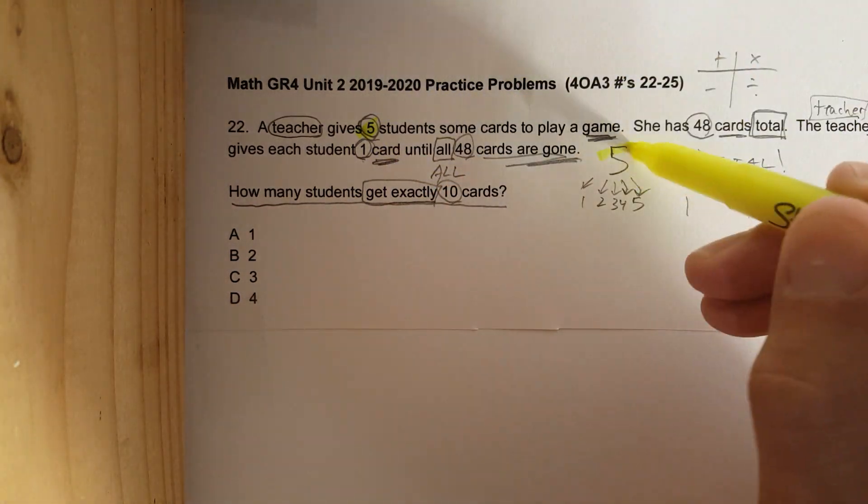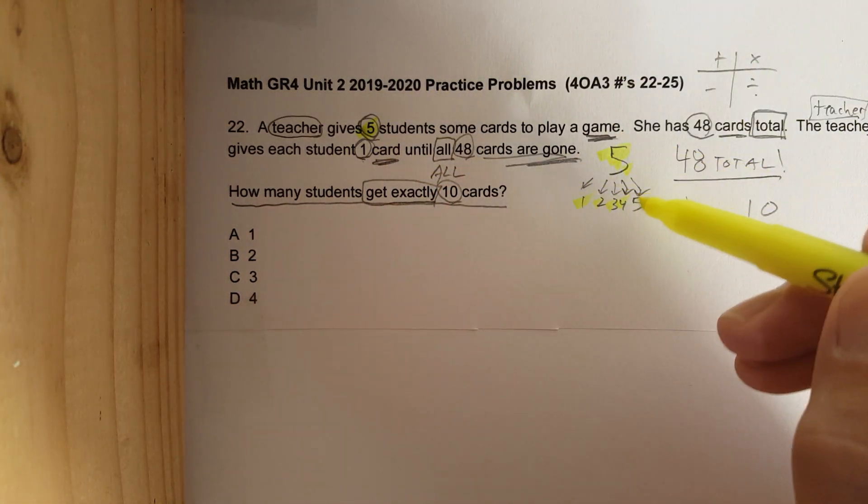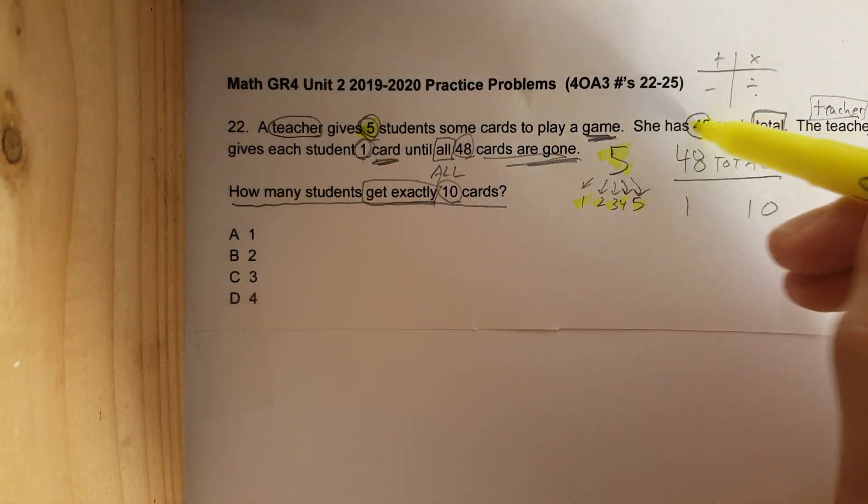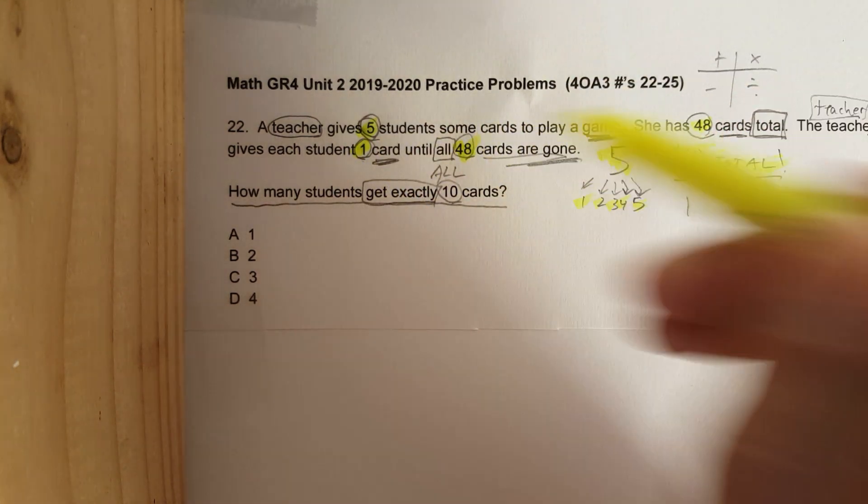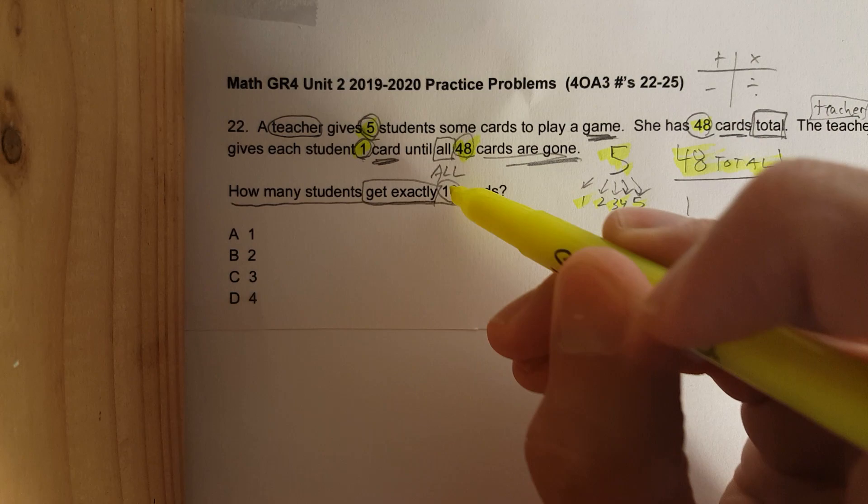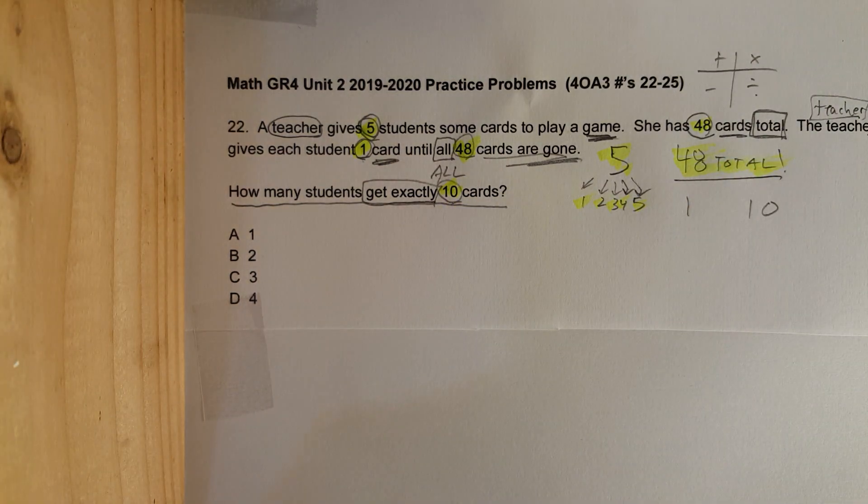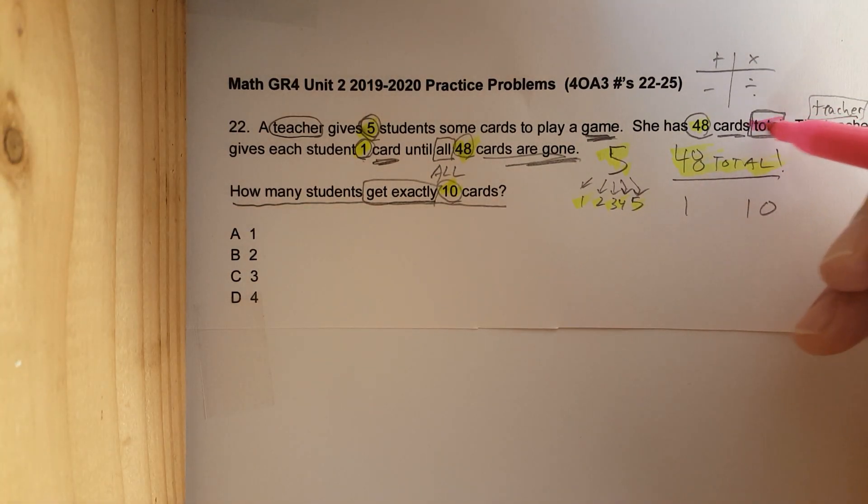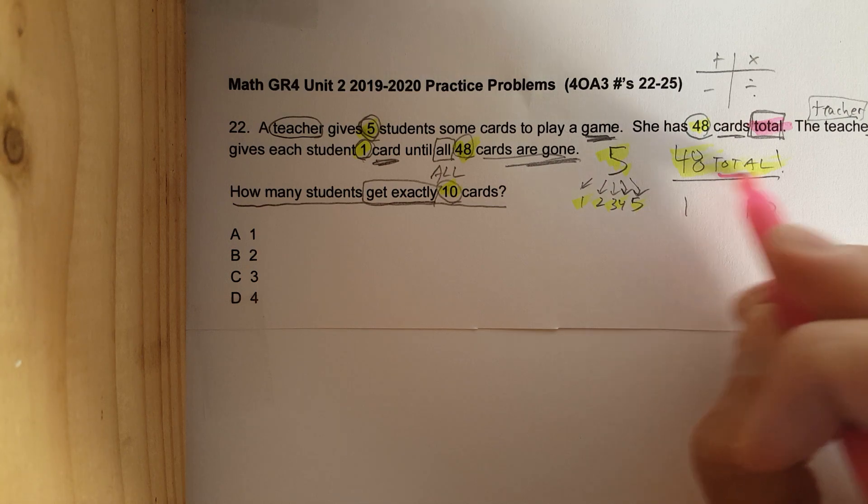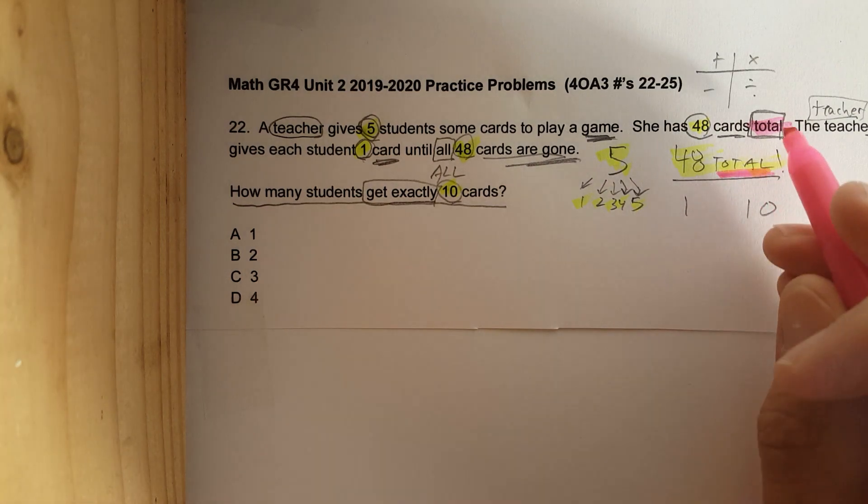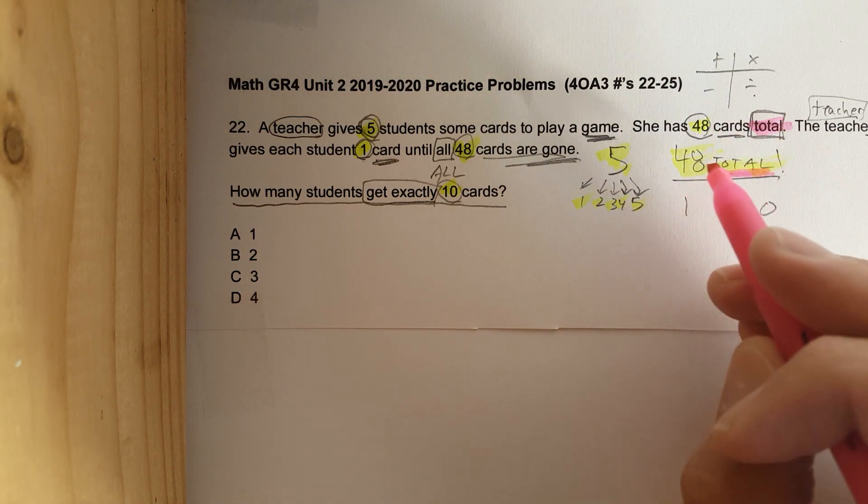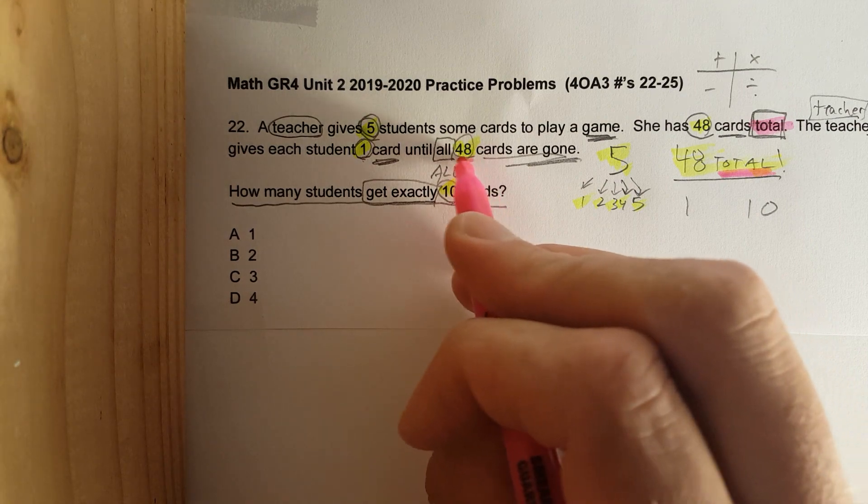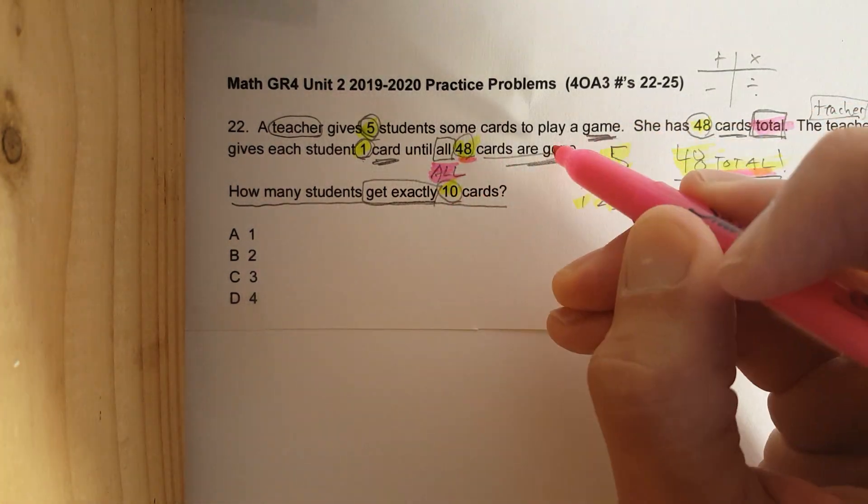We see the number five. There are five students, one two three four five, and they are playing a game. There's 48 cards total. The teacher gives each student one card until all 48 are gone. How many students get exactly 10 cards? Let's look at the very important words: total. There are no more than 48 cards. You do not go to 49 or 50, you need to get to 48. Until all of them are gone.